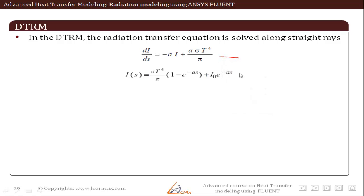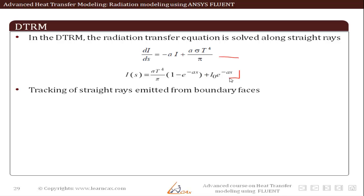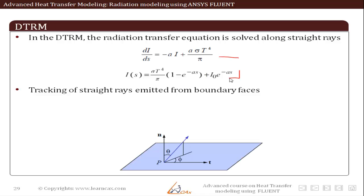The DTRM integrates this intensity equation and comes up with a result. The integration is done along a series of rays starting from boundary faces. The azimuthal and polar direction coordinates are used to define the rays used in DTRM. When the solver integrates the radiative transport equation we get the second equation shown. The DTRM determines the new intensity using the radiant intensity at the start of the incremental path, which comes from the boundary condition, I0.